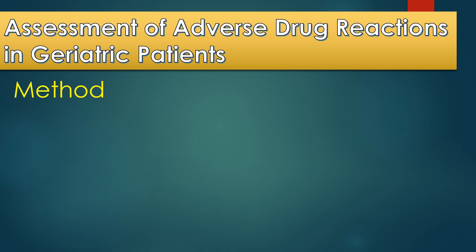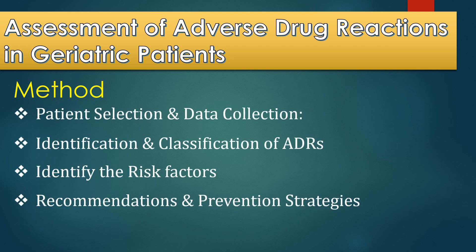How do researchers study adverse drug reactions in geriatric patients? Researchers study hospital records or nursing home data to identify elderly patients taking multiple medications, identifying adverse drug reactions using clinical symptoms, lab tests, and patient reports. Adverse drug reactions are classified as mild, moderate, or severe based on their impact, and findings are used for developing safer prescribing guidelines.